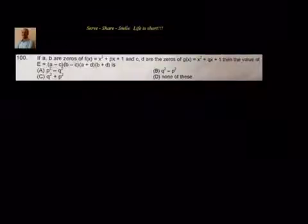If a, b are zeros of a polynomial x² + px + 1, and c, d are zeros of another polynomial g(x) = x² + qx + 1, then the value of (a − c)(b − c)(a + d)(b + d) is equal to how much? We have four options: p² − q², q² − p², q² + p², or none of these.